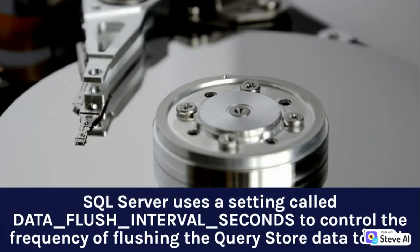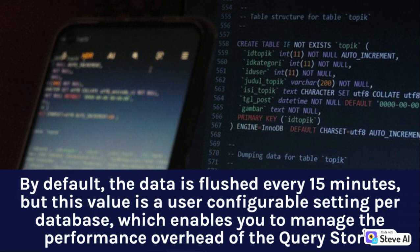SQL Server uses a setting called data-flush-interval-seconds to control the frequency of flushing the query store data to disk. By default, the data is flushed every 15 minutes, but this value is a user-configurable setting per database, which enables you to manage the performance overhead of the query store.